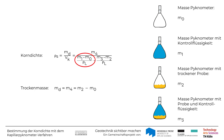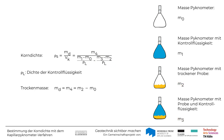Zur Ermittlung des Gesamtvolumens des Pygnometers werden die Referenzmessungen M1 und M0 verwendet. Von diesem Gesamtvolumen wird das Volumen abgezogen, das bei Füllung des Pygnometers mit Flüssigkeit und Bodenprobe von der Flüssigkeit eingenommen wird. Hierzu werden die Massen M3 und M2 herangezogen. Zur Bestimmung dieser Volumina wird die Dichte der Kontrollflüssigkeit Rho-L bei Prüftemperatur benötigt.